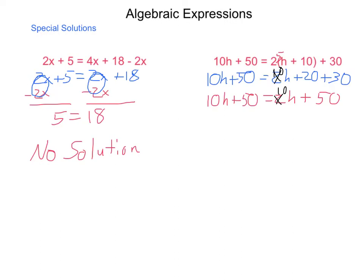Next, move all of our variables to one side. We subtract 10h from each side of our equation using the subtraction property of equality. And we come out with 50 equals 50. This is our second special situation. And what it involves is if you end up with an equation at the end that has no variable and is true, 50 is in fact equal to 50.